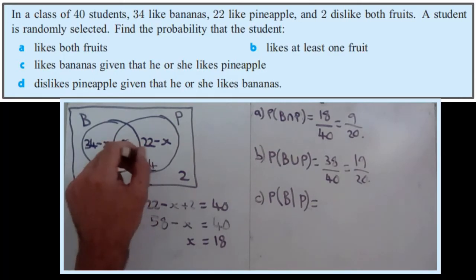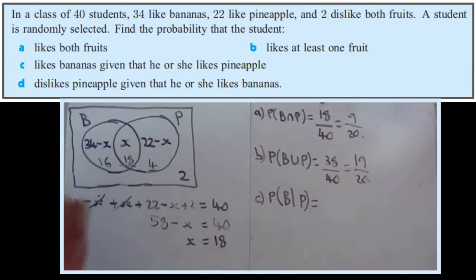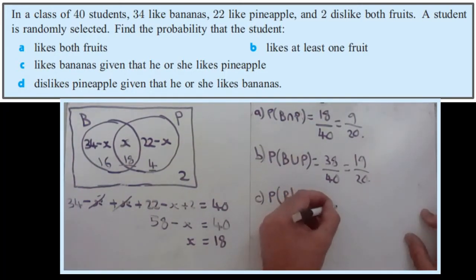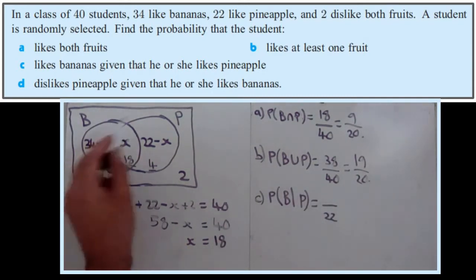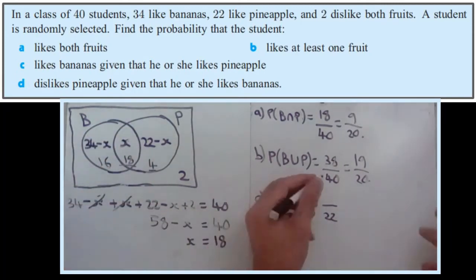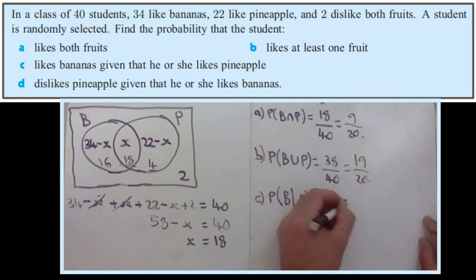So there's only 4 and 18, so there's 22 students that could possibly have selected. You know you've selected from a pool of 22. So the bottom number must be 22, the denominator. Out of those 22 who like pineapples, how many like bananas? Well, it's the 18. So 18 over 22 could simplify to 9 over 11.